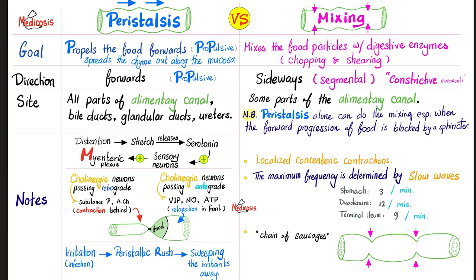Mixing movements — extra notes: these are localized concentric contractions, segmental movements. The maximum frequency is determined by the slow wave rhythms. In the stomach, three times per minute; in the duodenum, 12 times per minute; in the terminal ileum, nine times per minute. This is exactly the number of mixing movements in each part of your gut. With all this sideways, segmental, constrictive back-and-forth movement, your bowel will look like a chain of sausages.